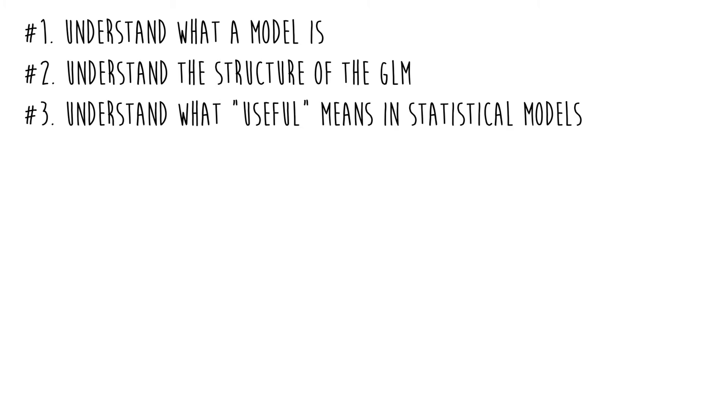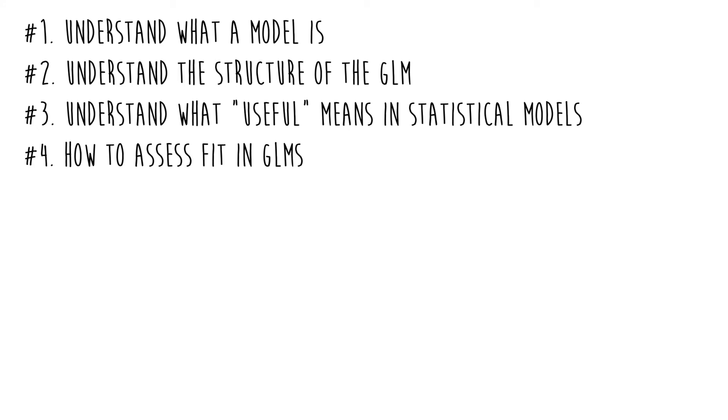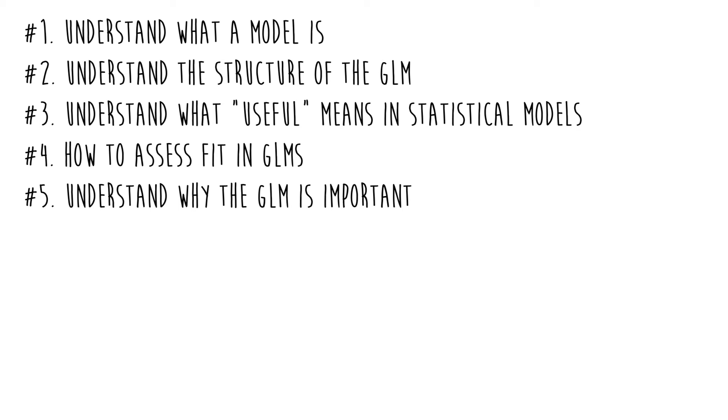Let's review our learning objectives. Number one: understand what a model is — a simplification of reality that ignores the non-essential elements and retains the essential elements. Number two: understand the structure of the general linear model — outcome equals intercept plus slope times predictor plus e, and you can add as many predictors, interaction terms, or polynomial terms as you want. Number three: understand what useful means in relation to general linear models — can it predict something and/or can it explain something? Number four: know how we assess fit — visually by looking at the plots and numerically by looking at the estimates, assuming our diagnostics check out. And finally: understand why the GLM is important — because it is the mother of all statistics. Peace out.